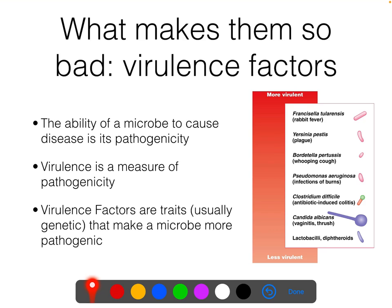Lactobacilli and diphtherioids are things that live on your skin all the time. Diphtherioids can sometimes cause acne, and that's about the worst thing they cause. Whereas something like Pseudomonas aeruginosa is fairly virulent — it's gram-negative, it's endotoxic, it's quite difficult for both chemicals and the immune system to get rid of. It can sometimes have toxins, capsules, and things like that. Yersinia pestis, the plague, is quite virulent, up at the top, though fortunately it does not spread terribly easily.